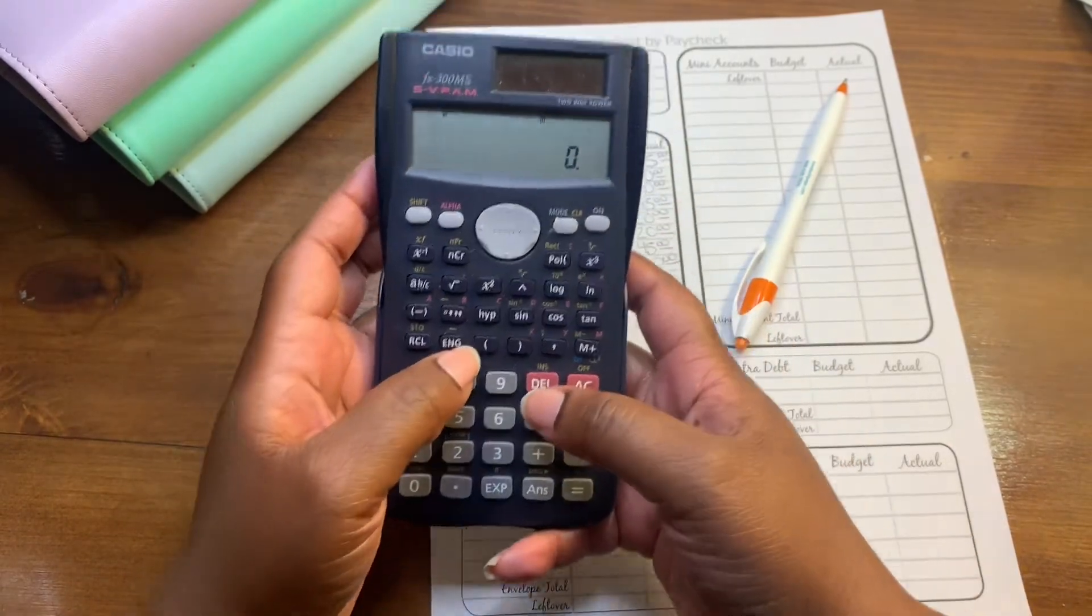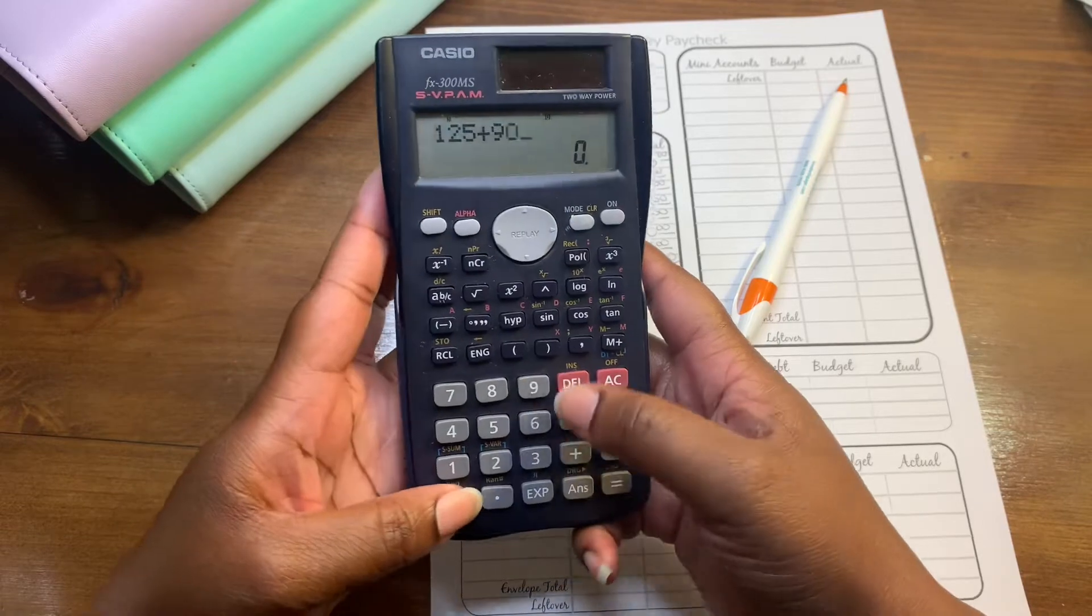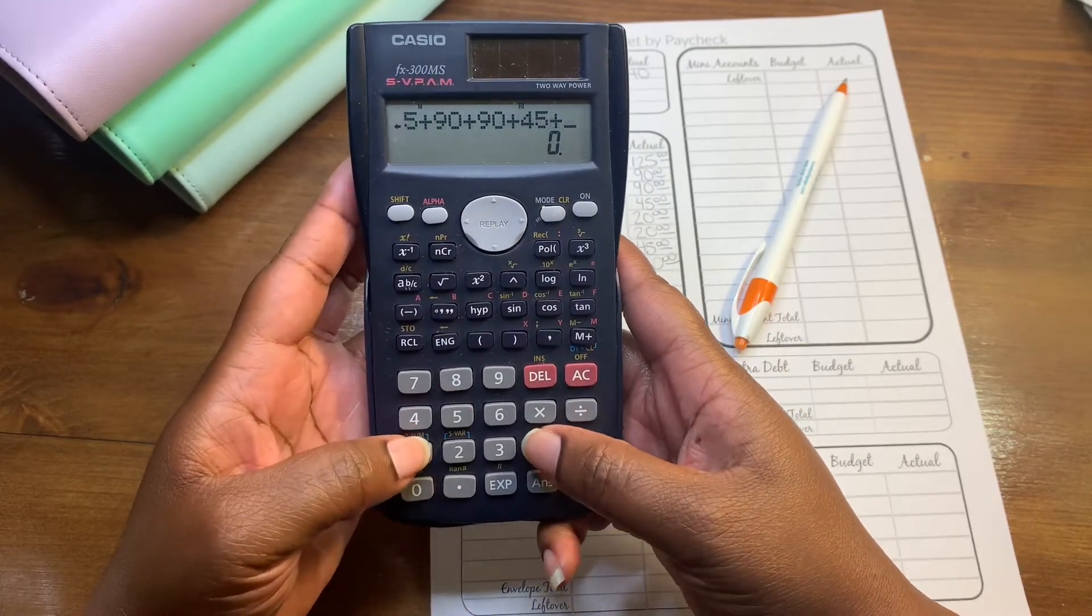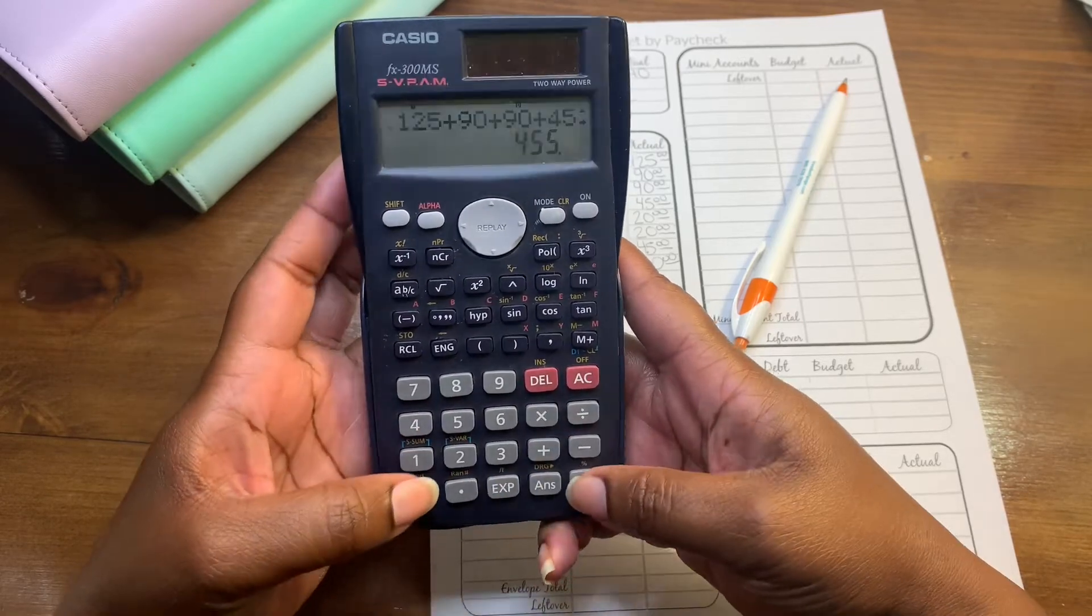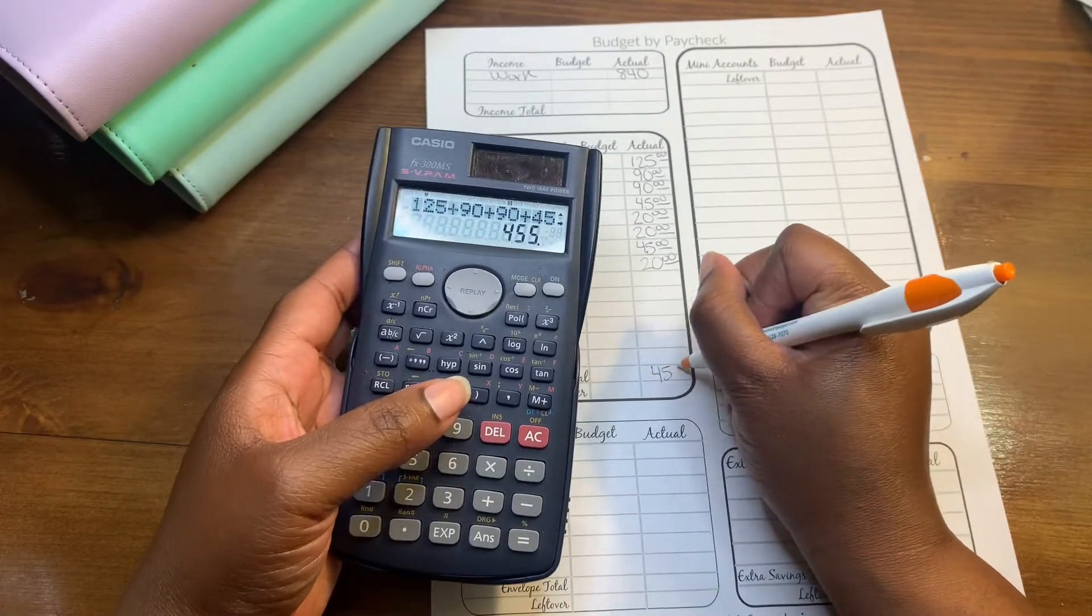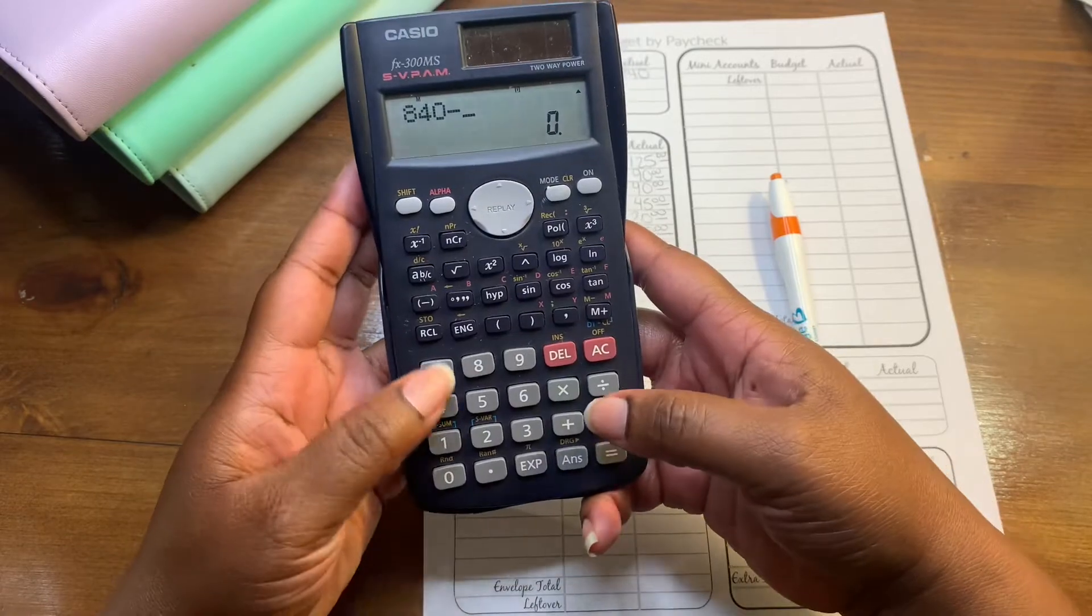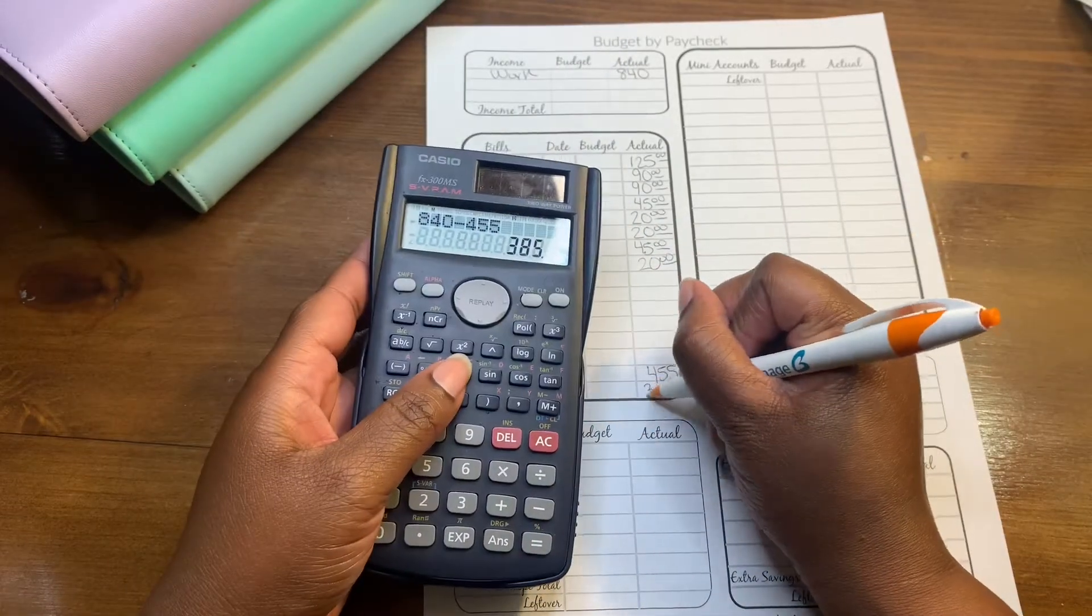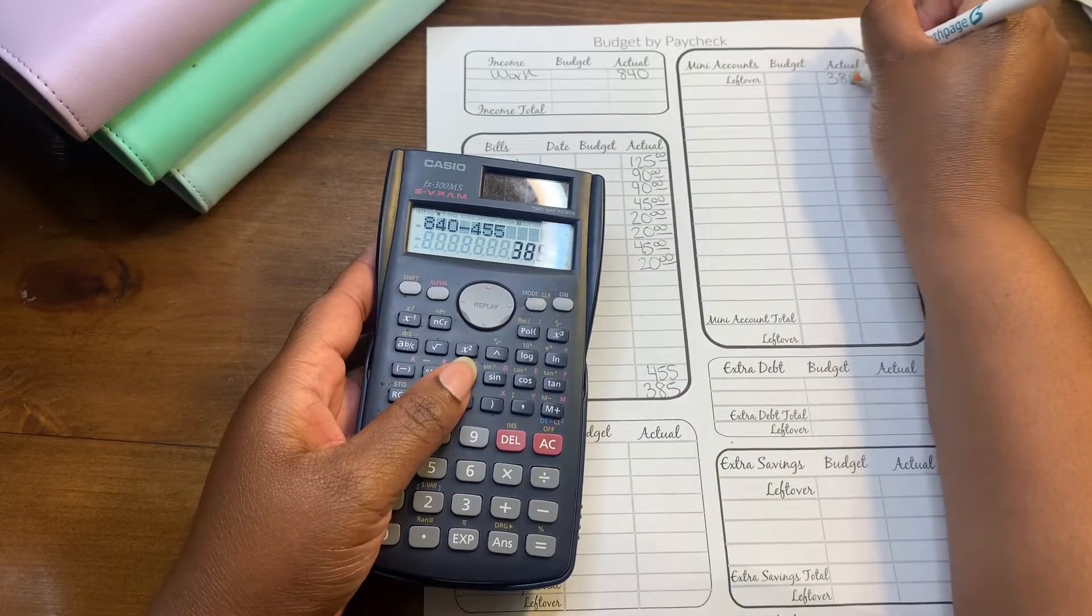So let's add this up: $125 plus $90 plus $90 plus $45 plus $40 plus $45 plus $20. That is $455. Now we're going to do $840 minus $455, which equals $385.